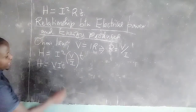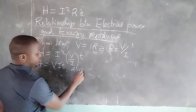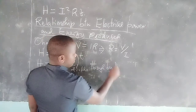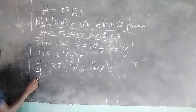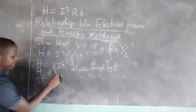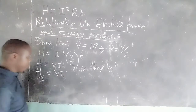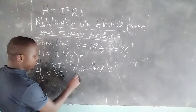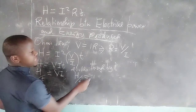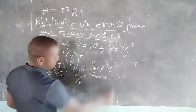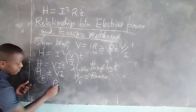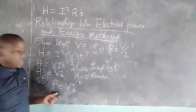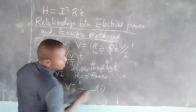If we divide both sides by time T, we get energy divided by time, which equals V times I. By definition, energy divided by time — the rate of conversion of energy — is called power. Therefore, energy divided by time gives us power. We can conclude that electrical power P is given by voltage times current: P = VI. We can call this Equation 1.